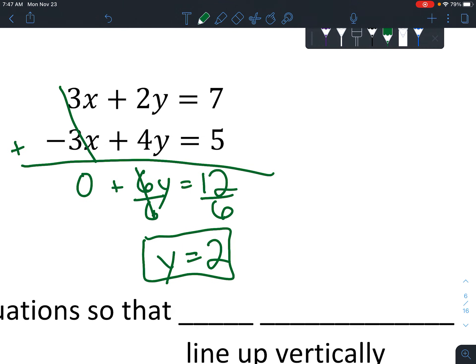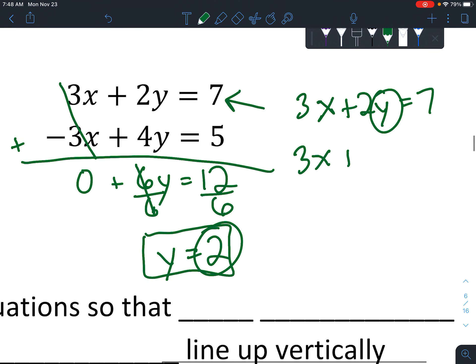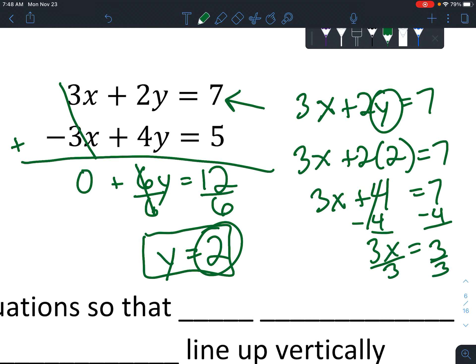And now to find x, you go back to one of the original equations. It doesn't even matter which one. I'm going to choose this first one. Either way, you'll get the same answer. And instead of a y, we now know that y equals 2. So we're going to pop that 2 right in there. So we've got 3x plus 2 times 2 equals 7. 2 times 2 is 4. Subtract 4 from both sides. 7 minus 4 is 3. Divide both sides by 3, and we get x equals 1.